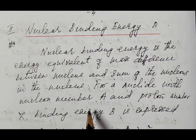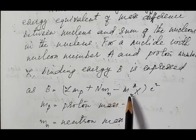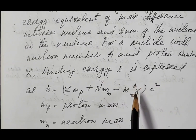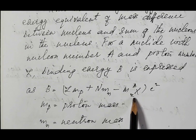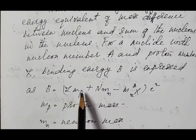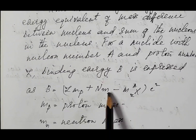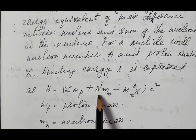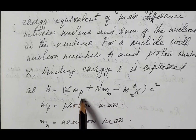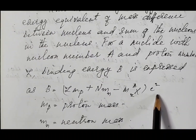For a nuclide with nucleon number A and proton number Z, binding energy B is expressed as B equals Z times M_P plus N times M_N minus the total mass of the nucleus, all into C squared. These terms together give the total mass of the nucleons minus the mass of the nucleus, and that mass difference multiplied by C squared is the binding energy.